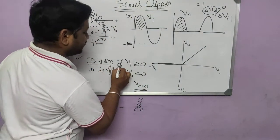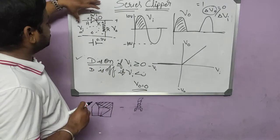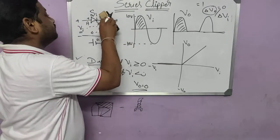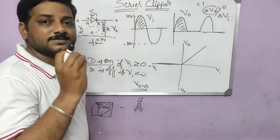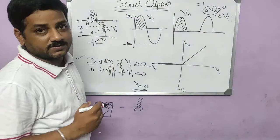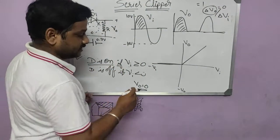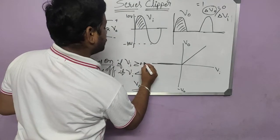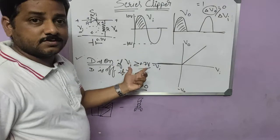So: diode is ON if the input is greater than zero — but wait, now we don't have cathode at zero. We have 0.7V here because it is a silicon diode; there is a new voltage of 0.7V. So the diode will conduct only if the input is more than 0.7V. The condition will be: diode conducts if Vin is greater than or equal to 0.7V.